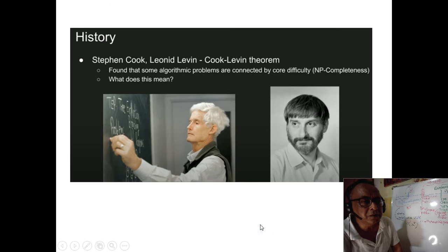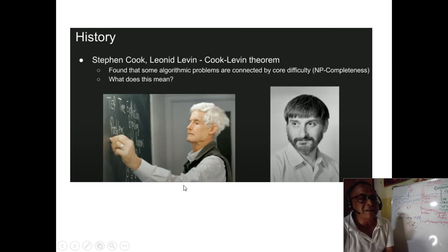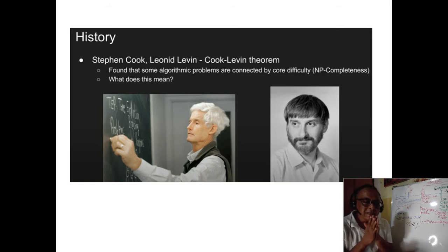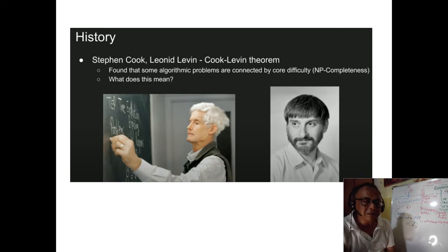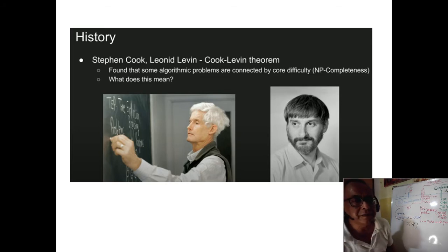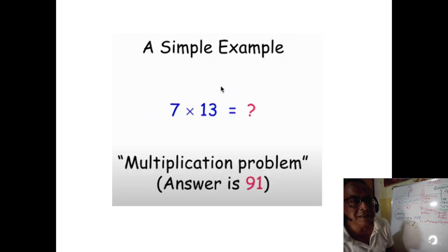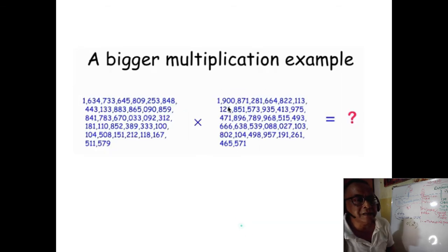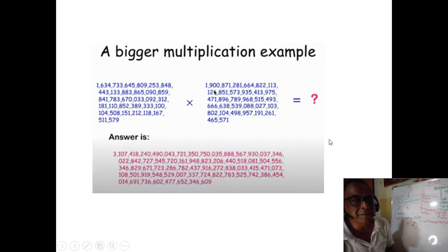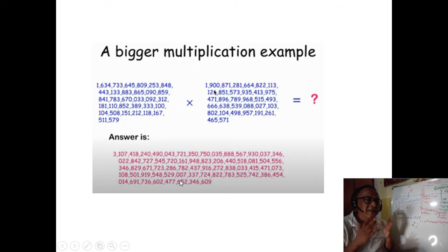Cook and Leonid Levin together proved that certain problems are very hard to solve, but once the solution is given, they can be checked. That is the NP-complete problem. Like in Michael Sipser's class: multiplying two numbers is easy, but given the product, factoring it is very, very tough. That is the basis of any security — we use security that way.